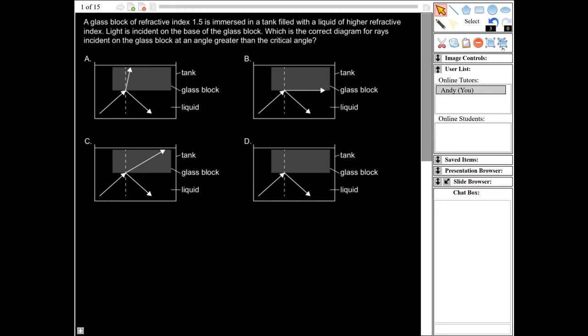So this is question 13. It says a glass block of refractive index 1.5 is immersed in a tank filled with a liquid of higher refractive index. Light is incident on the base of the glass block. Which is the correct diagram for rays incident on the glass block at an angle greater than the critical angle?